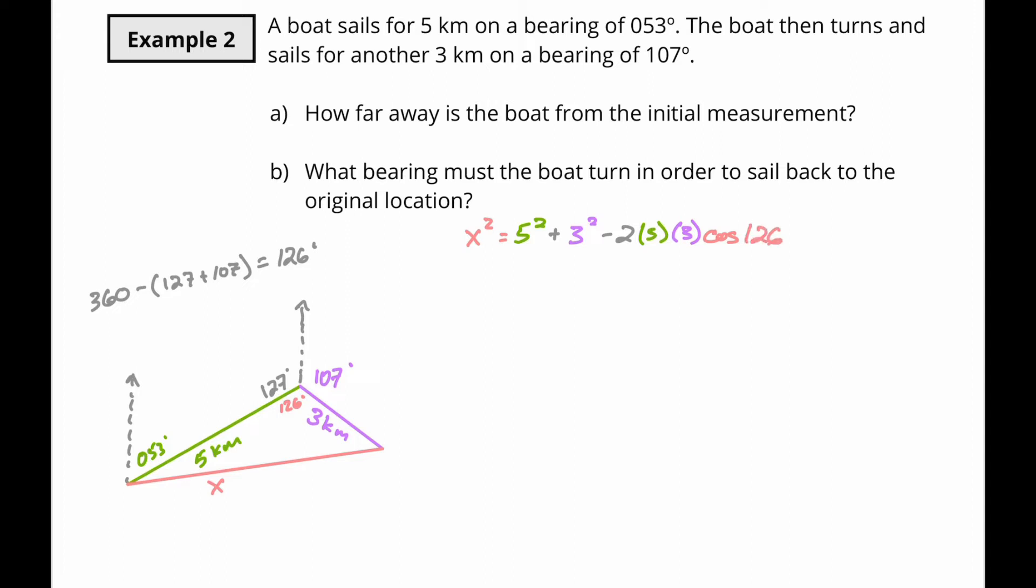Now we just do some of our computations. x squared equals 25 plus 9 minus 30 cosine 126. A common thing that I see people do is they add these together and then they subtract 30 and then they multiply this. Make sure you don't do that.